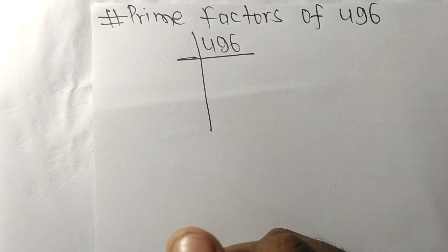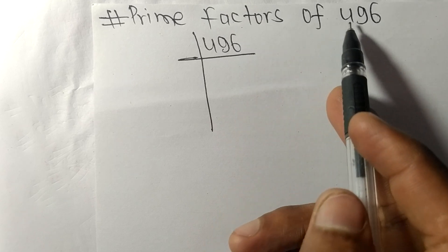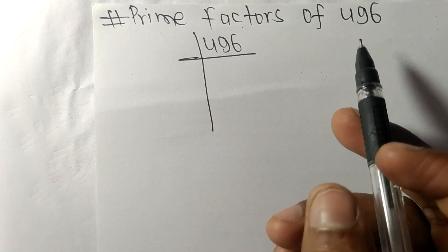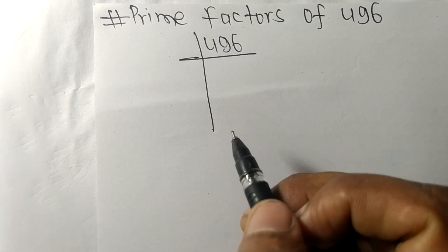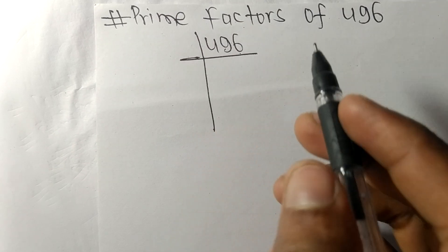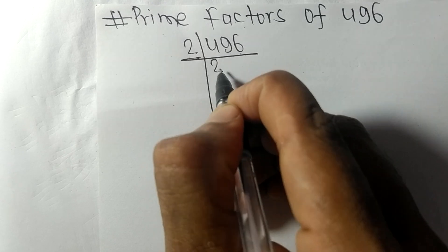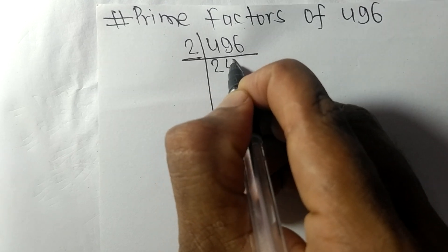Today in this video we shall learn to find the prime factors of 496. At last it contains even number 6, so the whole number is divisible by 2. Two times 2 is 4, two times 4 is 8, remainder 116... sixteen, two times 8 is 16. Again we have even number 8 at last, so it is divisible by 2.